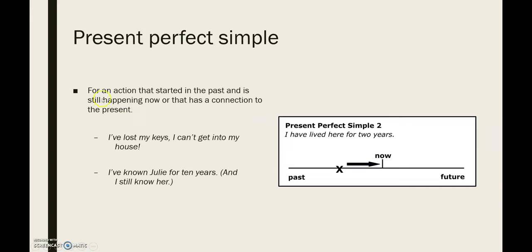Now, why do we need it? For an action that started in the past and is still happening now, or that has a connection to the present. Whatever you started in the past, you're still doing right now, or you still have or know right now — it's something that still lives on at the moment. For example: 'I've lost my keys, I can't get into my house' — meaning I still don't have them. Or 'I've known Julie for 10 years' — making it clear that you still know her. This is the moment you met Julie and you still know her right now.